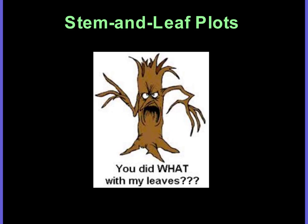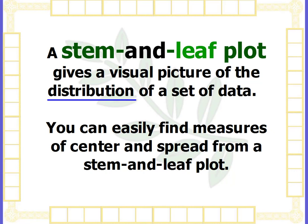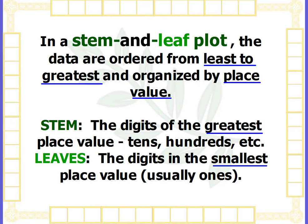Hi Bobcats, this is Ms. Lee and in this video we're going to talk about stem and leaf plots. A stem and leaf plot gives a visual picture of the distribution of a set of data. You can easily find measures of center and spread from a stem and leaf plot. In a stem and leaf plot, the data are ordered from least to greatest and organized by place value — that's very important to note.